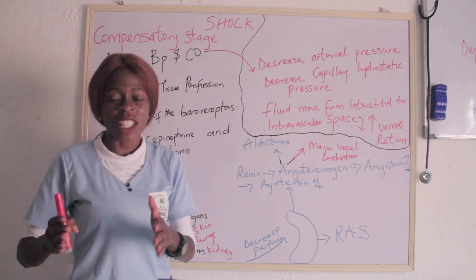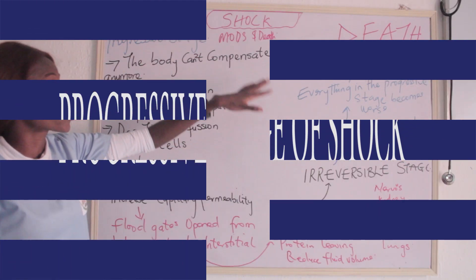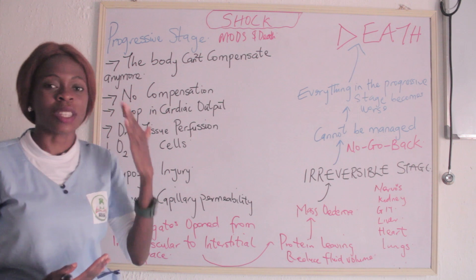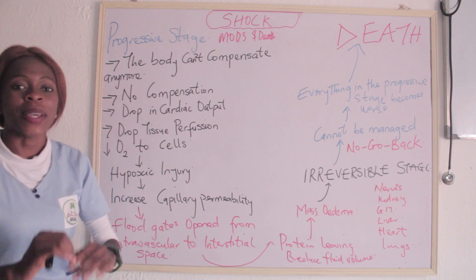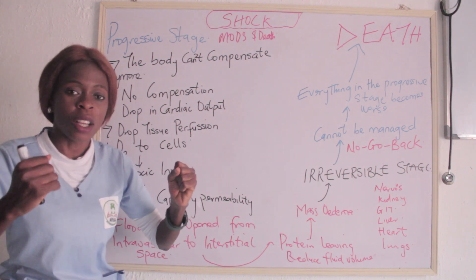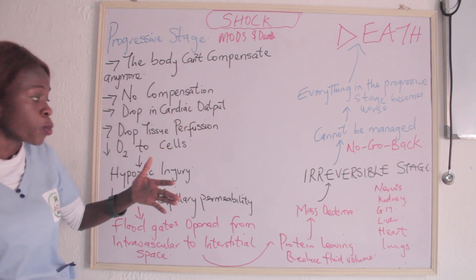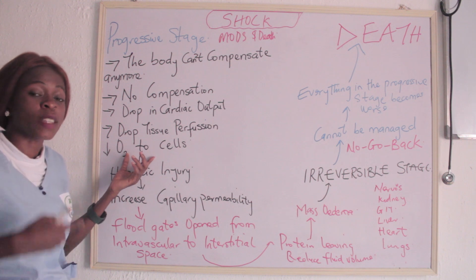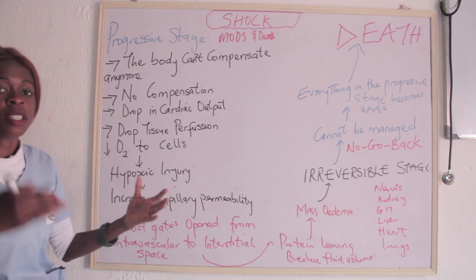That takes us to the third stage of shock — the progressive stage. As the name implies, it is progressing. It can lead to multiple organ dysfunction syndrome and finally leads towards the irreversible stage, which leads to death. At this stage, the body can no longer compensate. The body is tired and weak, so there is a drop in cardiac output, drop in tissue perfusion, and the cells will not be getting enough oxygen, leading to hypoxic injury.